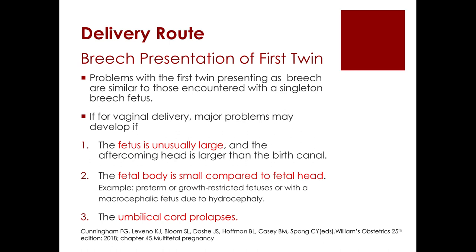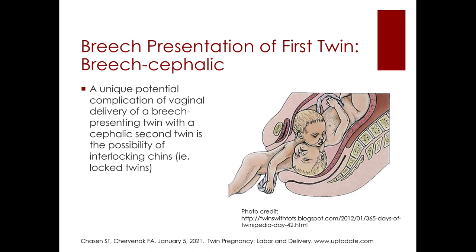For a breech-presenting first twin, problems are similar to those with a singleton breech fetus. Major issues may arise if the fetus is unusually large with an aftercoming head larger than the birth canal, if the fetal body is small compared to the fetal head — as in preterm, growth-restricted, or macrocephalic fetuses — or if the umbilical cord prolapses. A unique complication of vaginal delivery of a breech-presenting twin with a cephalic second twin is the possibility of interlocking chins, which is one reason most obstetrician-gynecologists prefer outright cesarean section if the first twin presents breech.